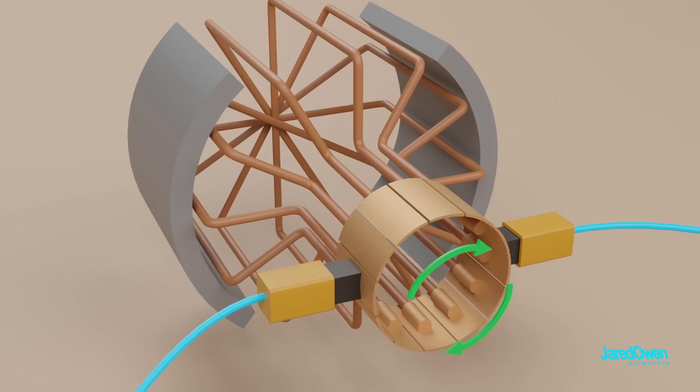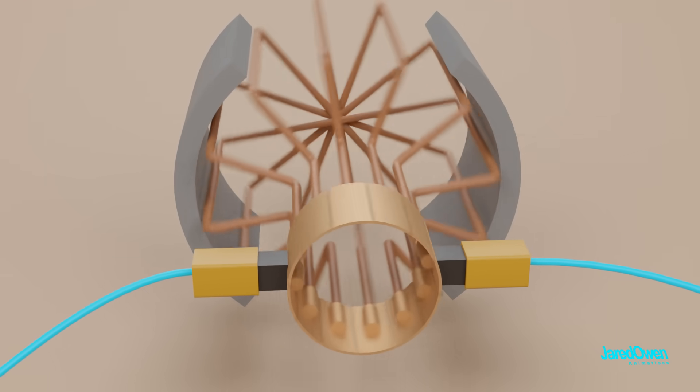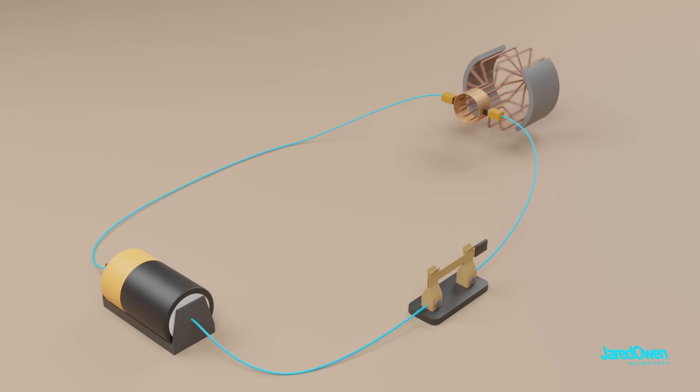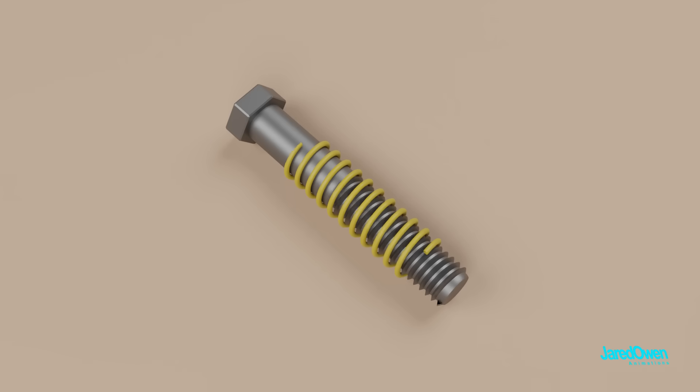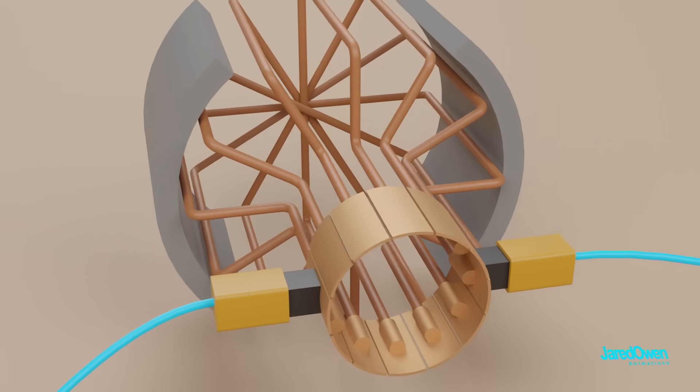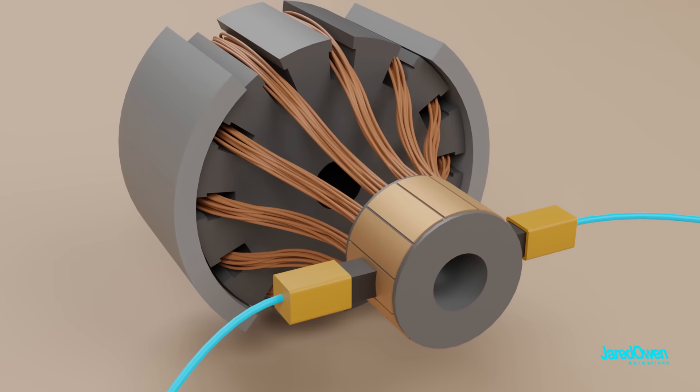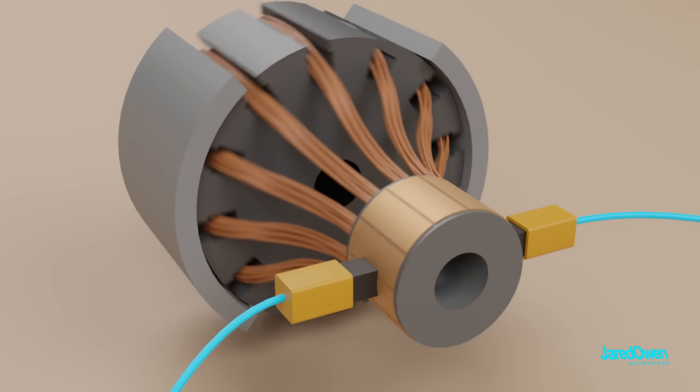This spinning force on the armature is called a torque. Stronger torque means a faster spin. There are some things we can do to improve the torque of the motor. Electromagnets are stronger when there are more wires. This is true when we wrap more wires around the metal bolt, and it's also true when each of our armature loops are made of many wires. The motor will have stronger electromagnets, which means it will spin faster.